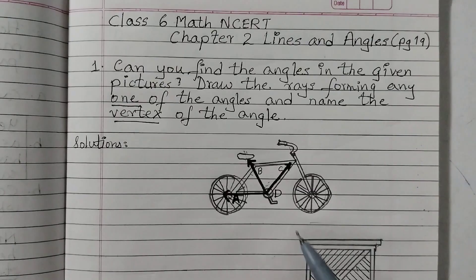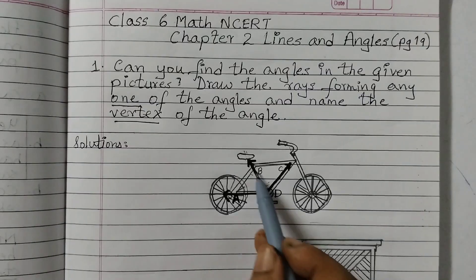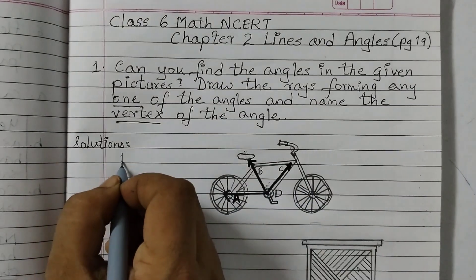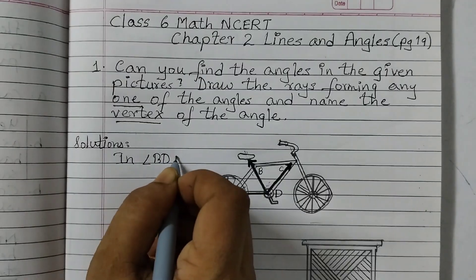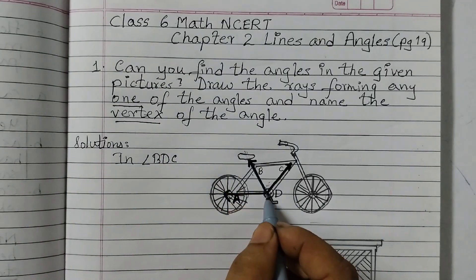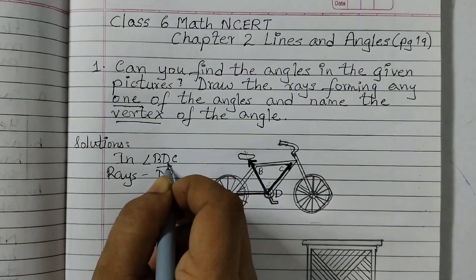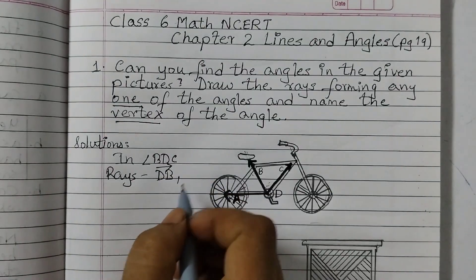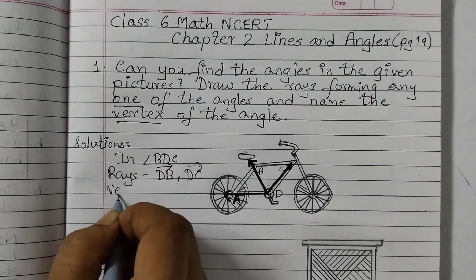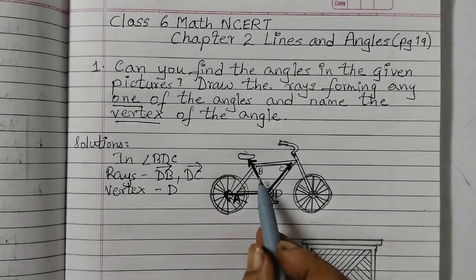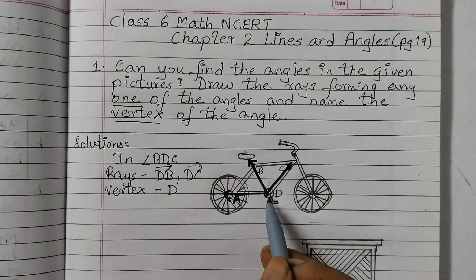Now let us get started with the solution. The first figure is of a bicycle, and the rays are already shown — we have ray DA, DB, DC. If you take angle BDC, the rays are DB and DC because D is the starting point. Put an arrow on top showing ray DB and ray DC. The vertex is the common point, so the vertex is point D. If you take angle ADB, the rays would be DA and DB, and again the vertex would be D. You can take any angle of your choice.